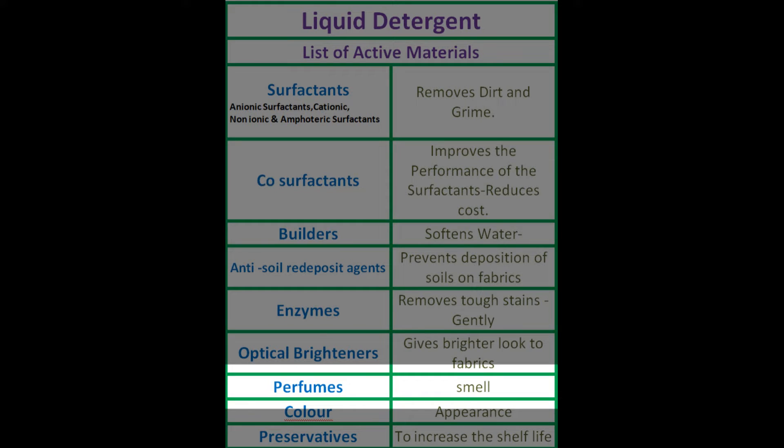Next, perfumes. Perfumes are not contributing to the washing process, but even so, this is a very important material. Generally, all customers will judge the performance of the liquid detergent only by means of the perfume. In the case of perfumes, many brands, many dilutions, many concentrations, and many flavors are available. A good perfume is a double plus point for liquid detergent.